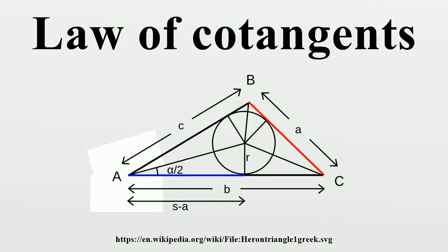In trigonometry, the law of cotangents is a relationship among the lengths of the sides of a triangle and the cotangents of the halves of the three angles.